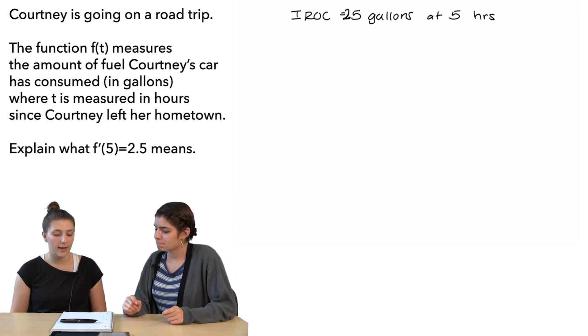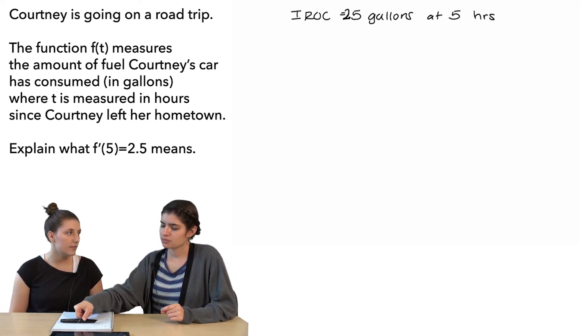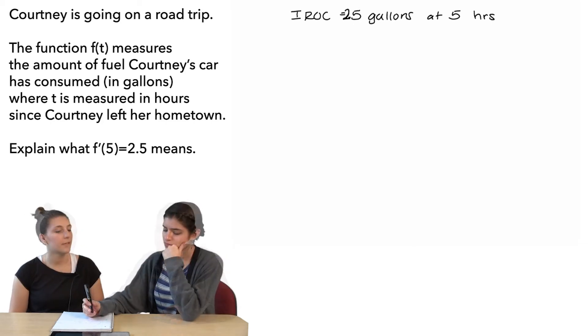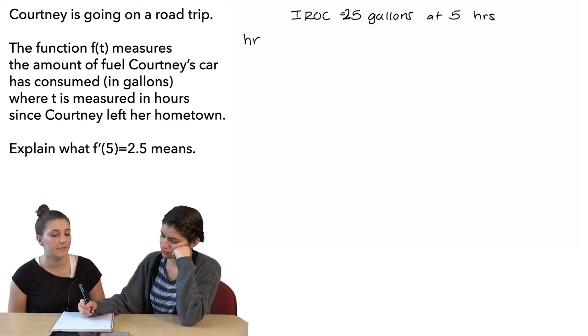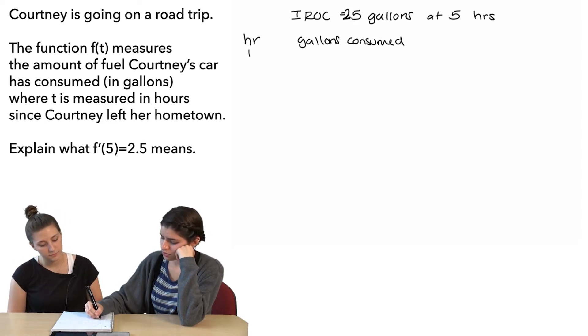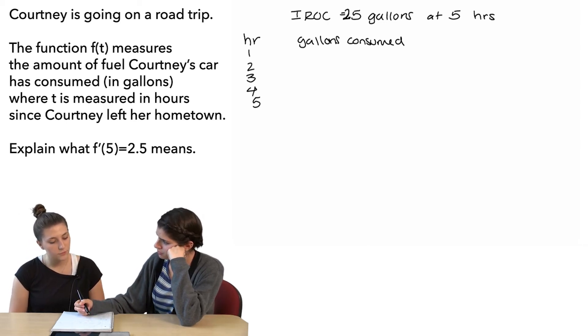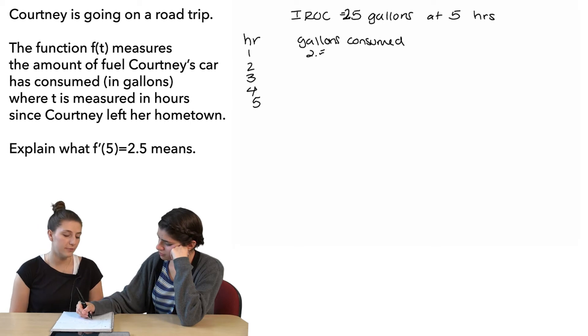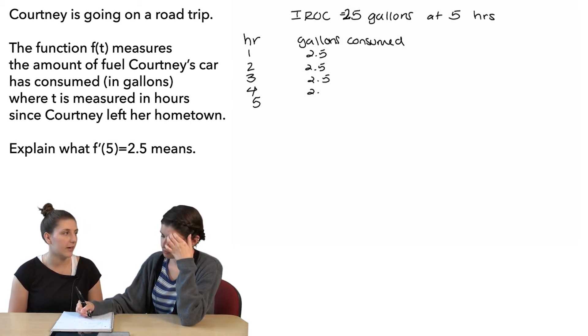That maybe at every hour she's had 2.5 gallons consumed? So that the amount of fuel consumed increased by 2.5 after each hour? So you're saying like at hour 1, 2, 3, 4, 5, how many gallons did she consume? 2.5 and then 2.5, and for 3, 2.5, and for 4, 2.5, and for 5, 2.5.